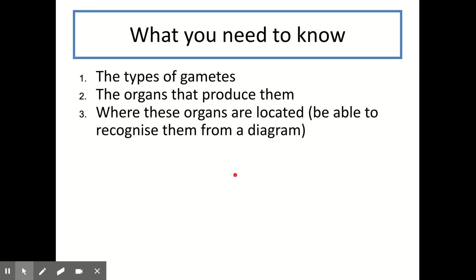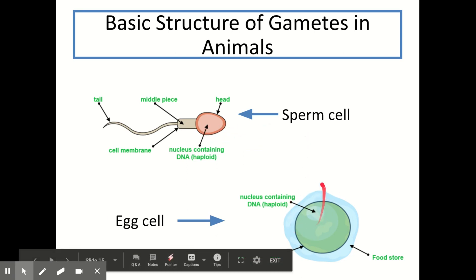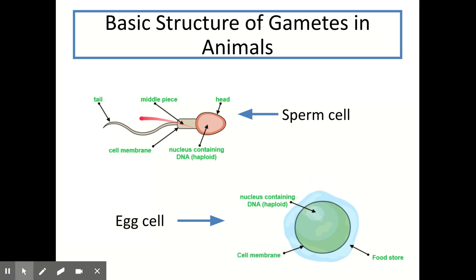What you need to know about reproduction in animals or plants includes the types of gametes, the organs that produce them, and where those organs are located — and you need to be able to recognise those organs from a diagram. In animals, the male gamete is called a sperm cell and the female gamete is the egg cell. The basic structure of the sperm cell includes the head, which contains the haploid nucleus with a single set of chromosomes, a middle piece joining the head to the tail, and the tail which helps the sperm swim to the egg.